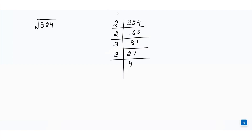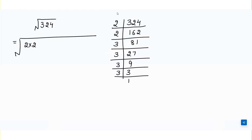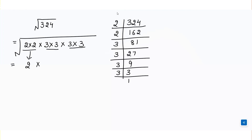Then we divide 27 by 3 to get 9, divide 9 by 3 to get 3, and divide 3 by 3 to get 1. So 324 can be written as 2 × 2 × 3 × 3 × 3 × 3. We have two pairs — one pair of 2 and two pairs of 3 — so we write 2, 3, 3, giving an answer of 18. The square root of 324 is 18.